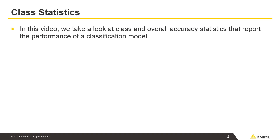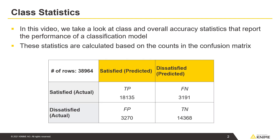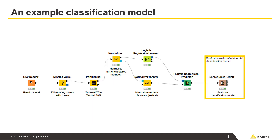In this video, we take a look at class and overall accuracy statistics that report the performance of a classification model. These statistics are calculated based on the counts in the confusion matrix. Here, you see an example classification model that predicts customer satisfaction for a fictitious airline using the logistic regression algorithm.